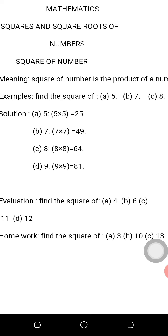So once any number is given to you, you are to multiply that number by itself. So you are going to get the square of that number.